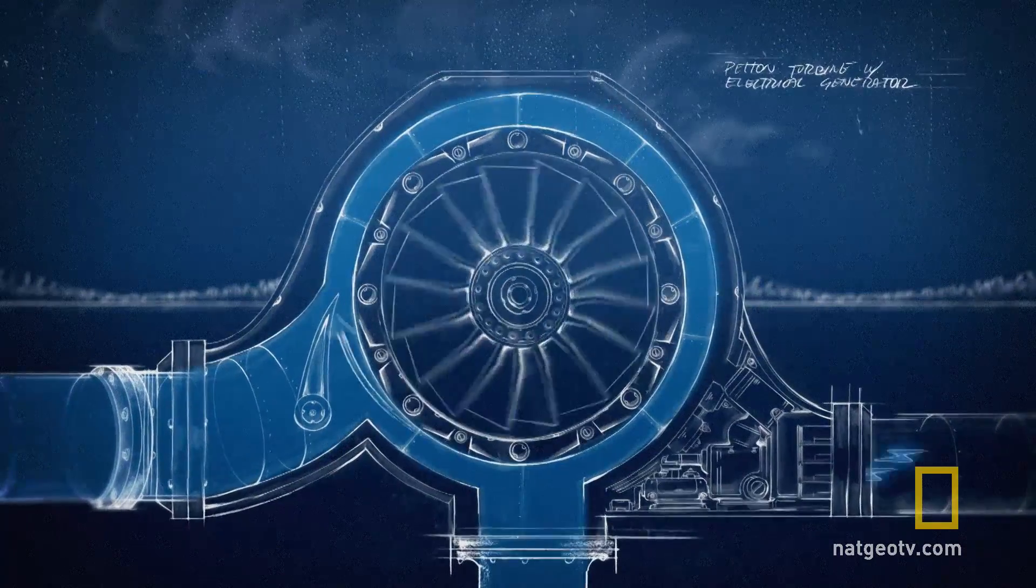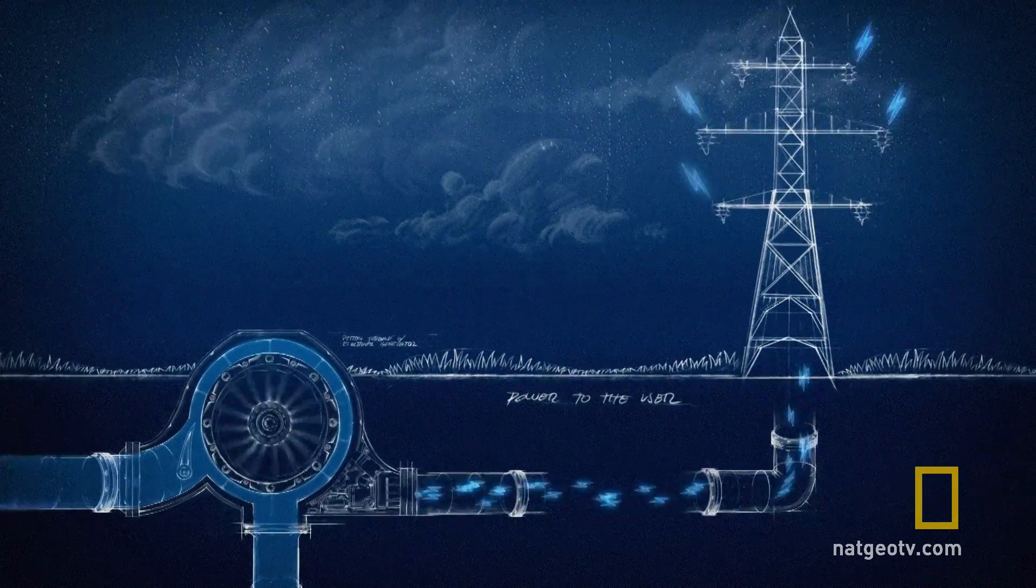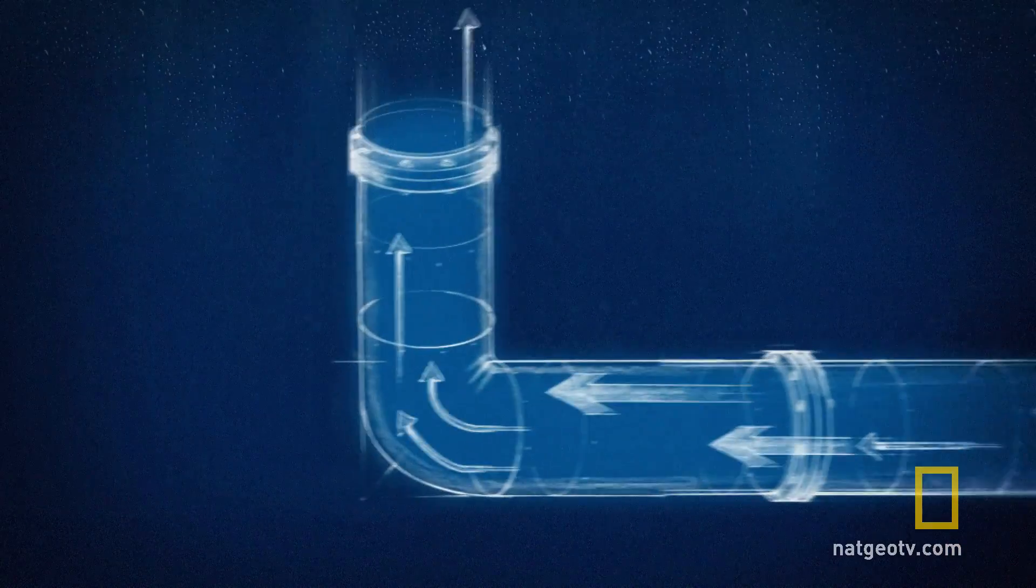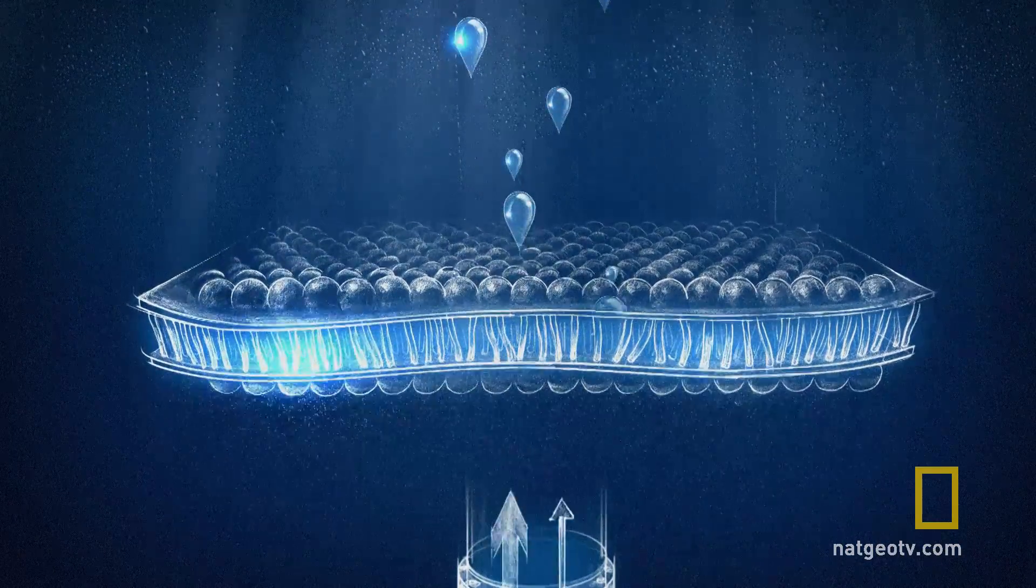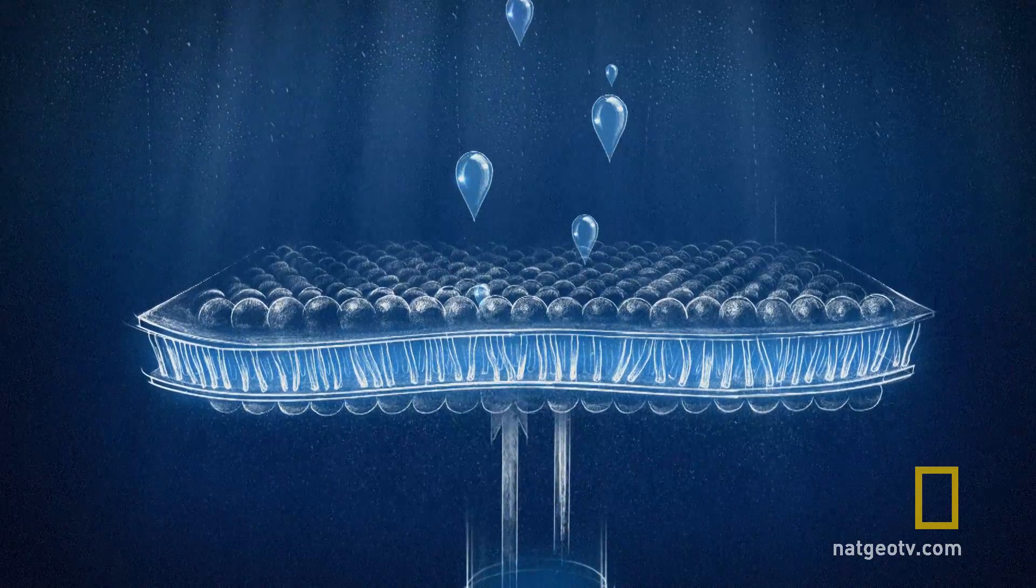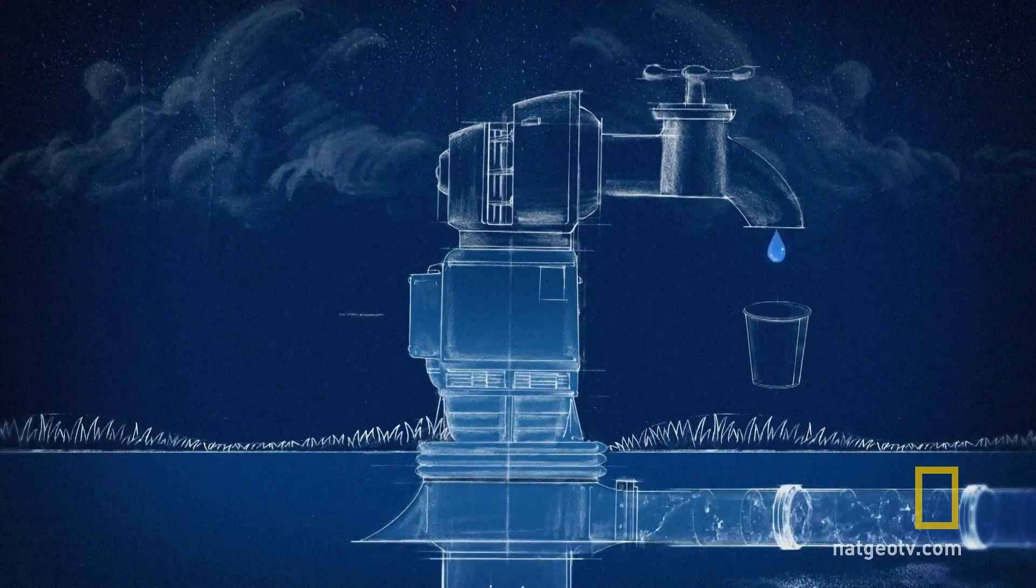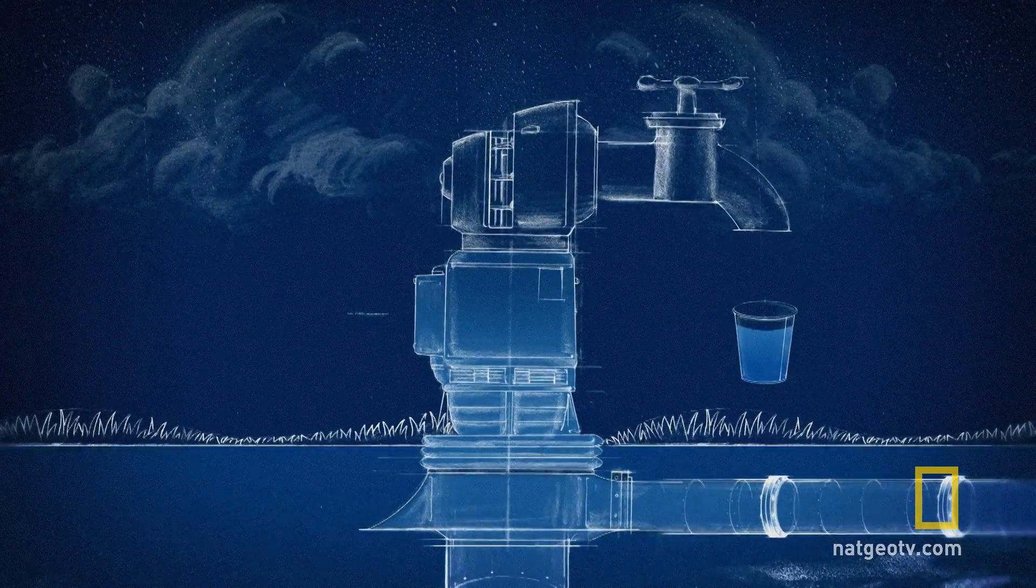The high-pressure water spins turbines that generate electricity, but the water also pushes seawater into a reverse osmosis membrane. The membrane filters out salt. The end product is zero emissions drinking water.